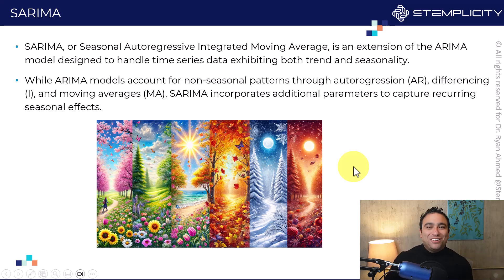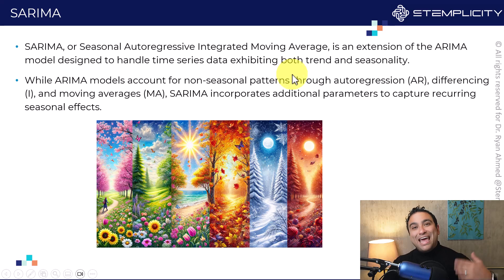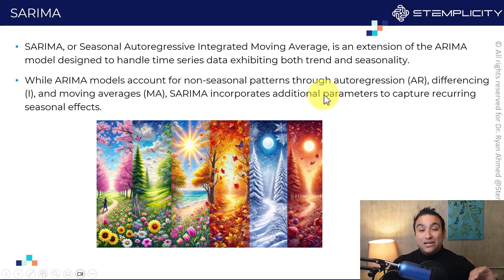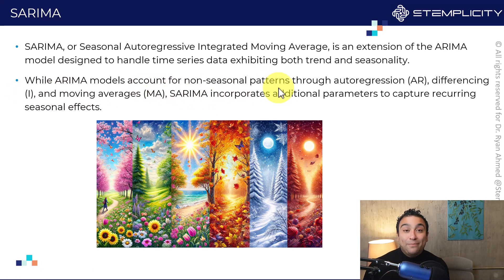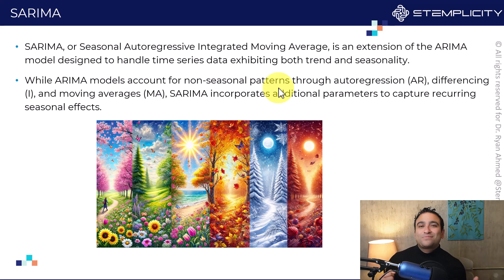There is a slight variation called the S-ARIMA model, or Seasonal Autoregressive Integrated Moving Average. It is an extension of ARIMA designed to handle time-series data exhibiting both trends and seasonality. While ARIMA accounts for non-seasonal patterns through autoregressive, differencing, and moving averages, S-ARIMA has additional parameters to capture recurring seasonal effects. In the coming example we'll apply the ARIMA model, and as a practice opportunity I'll ask you to apply the S-ARIMA model, compare performance, and see if it improved.